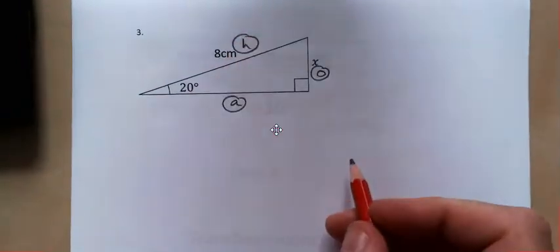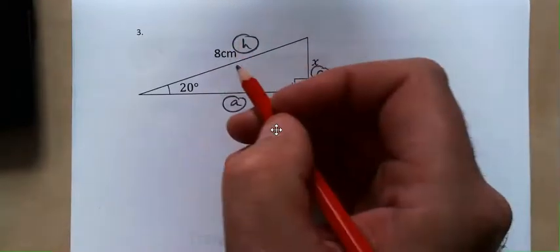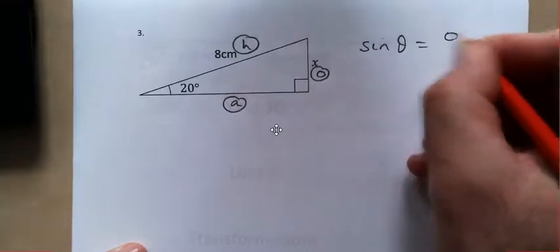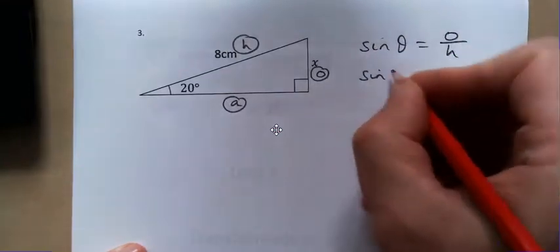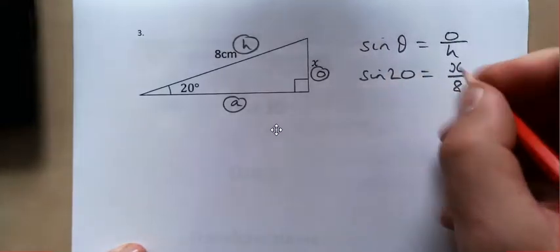And we have h. And we want o. So it's o and h. So it's going to be sine. Sine theta equals o over h. Sine 20 equals x over 8.